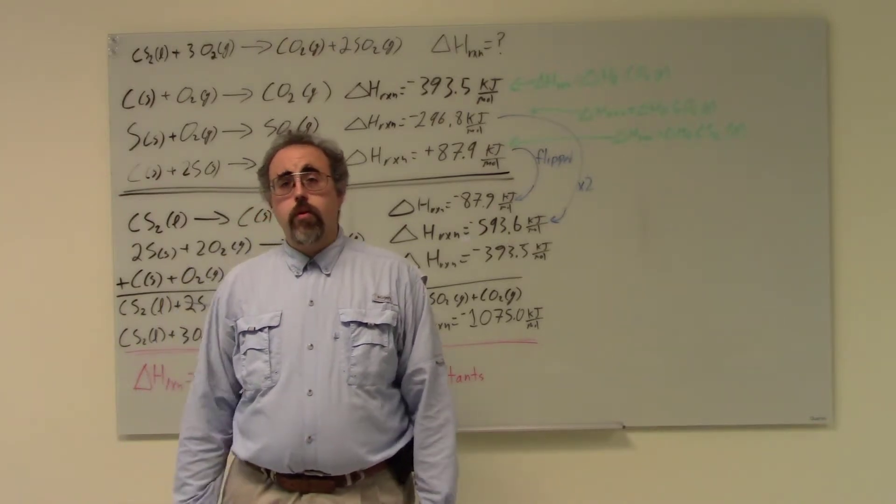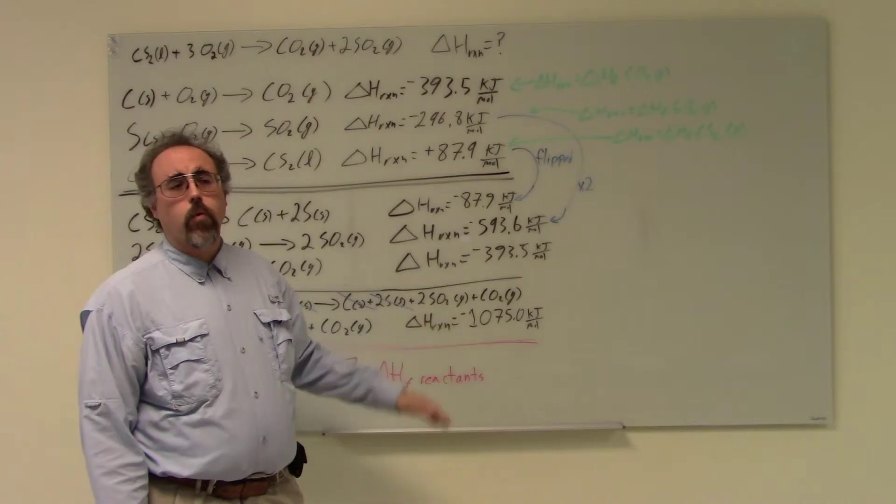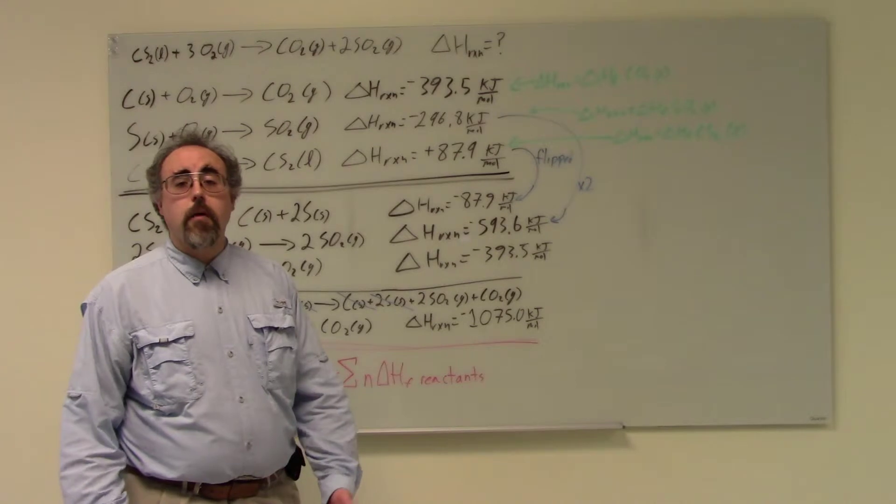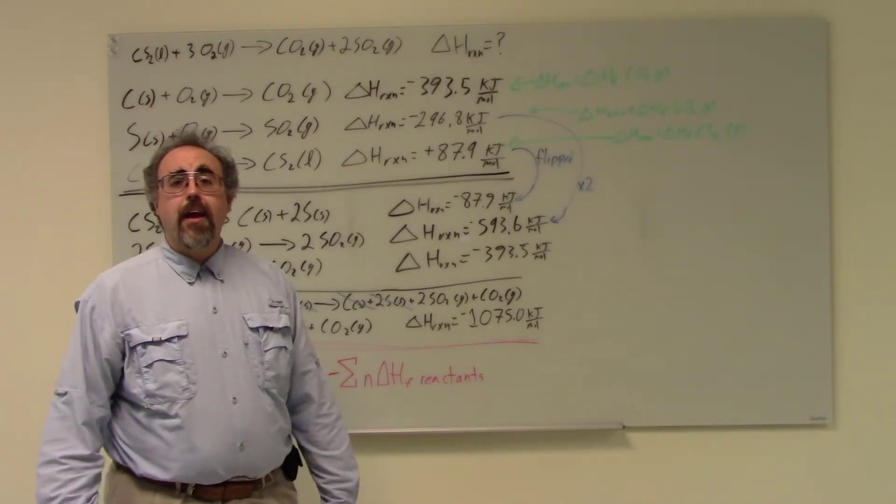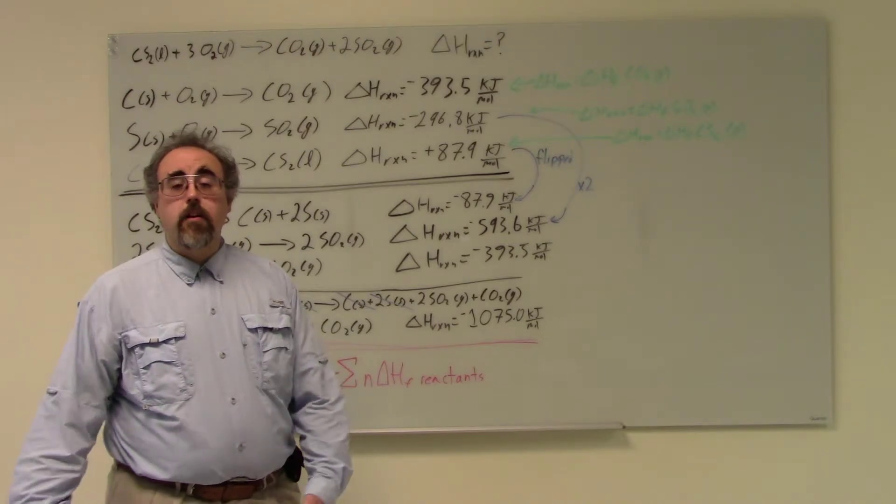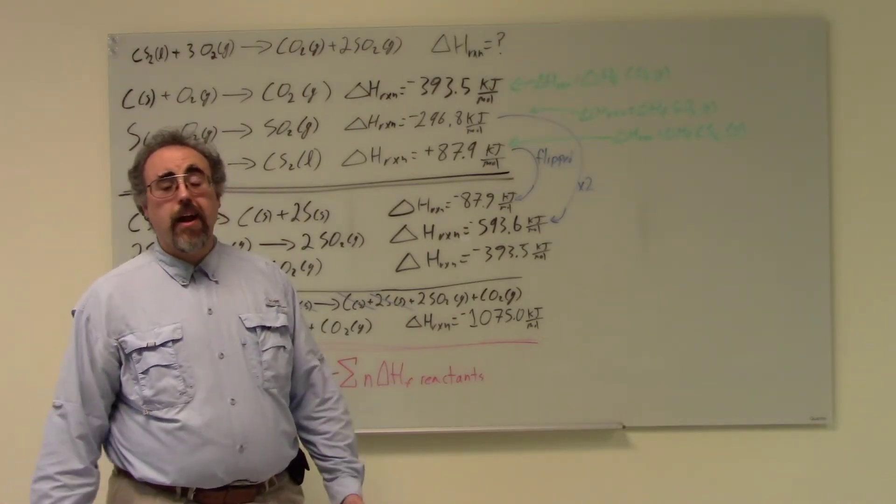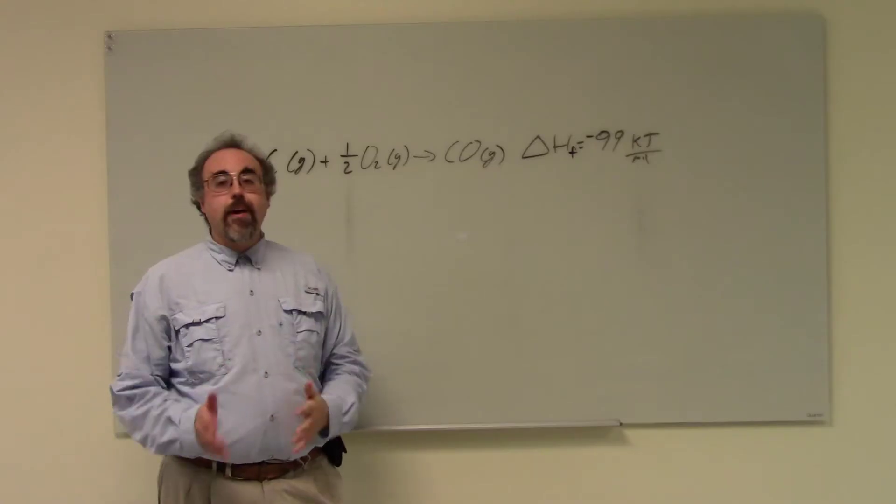You'll also notice one other thing when looking at heats of formation. They're almost always negative, or maybe slightly positive. Heats of formation, when they're negative, suggests that the compound will generate or give off energy when it's formed, and typically that means it's likely to be formed. If the compound gives off energy when it degrades, there's a good chance it's just going to go ahead and degrade.